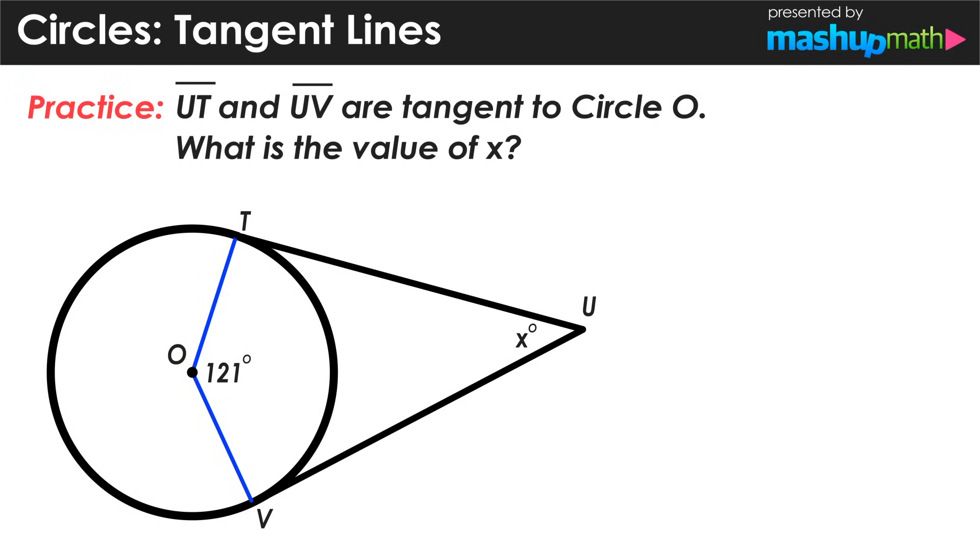So now let's go ahead and apply our understanding of tangent lines and circles to a practice problem. In this case, we have line segment UT and line segment UV, both being tangent to circle O, and we're looking to find the value of x shown on the diagram.